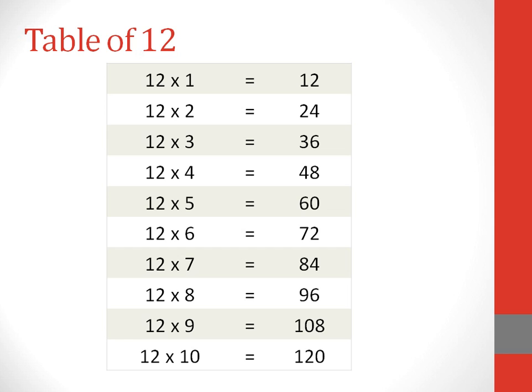12 sixes are 72. 12 sevens are 84. 12 eights are 96. 12 nines are 108. 12 tens are 120.